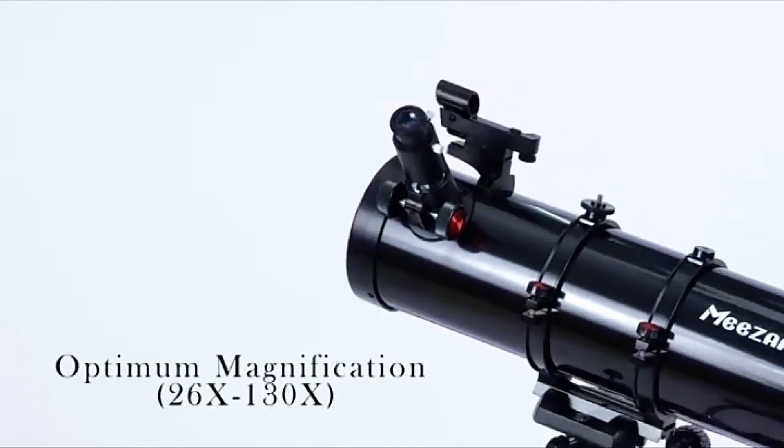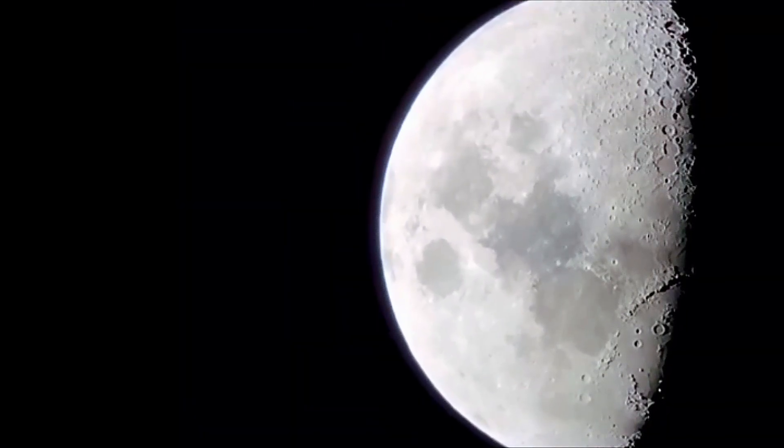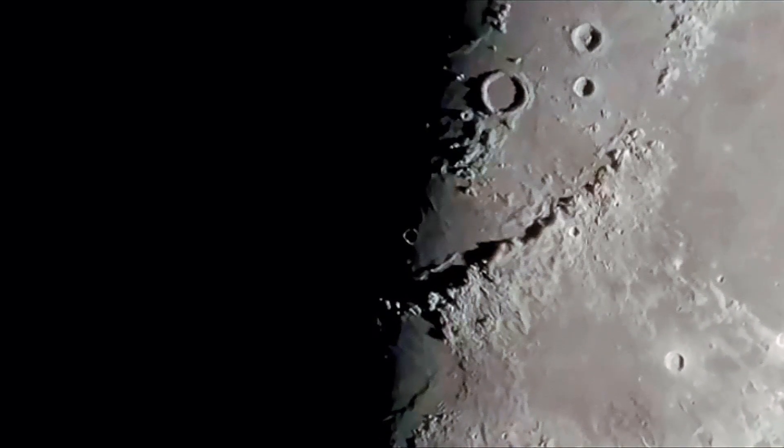150mm Large Aperture. The Reflector Telescope for Adults Astronomy has a 650mm focal length and 150mm aperture, providing excellent light-gathering power, ensuring exceptional image quality, perfect for the observation of deep-space celestial objectives.